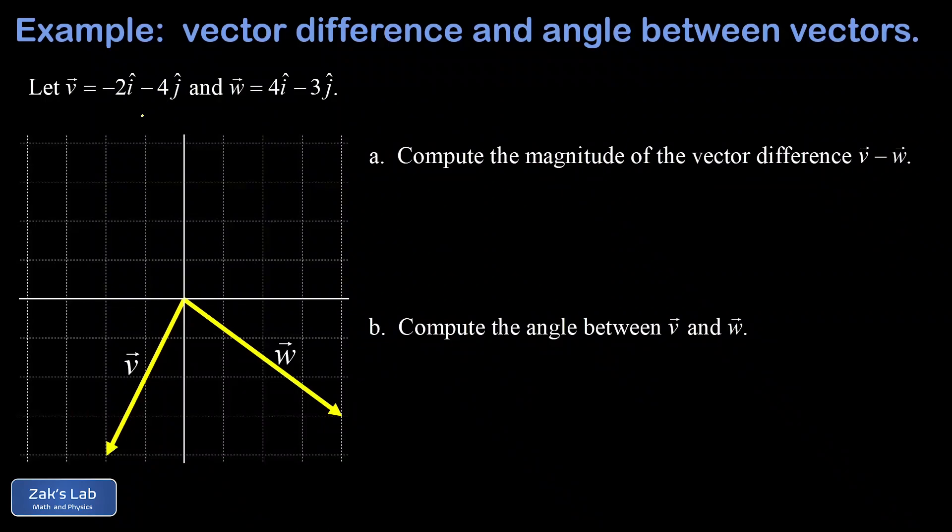In this video we're given two vectors in i-hat j-hat notation. Vector v is -2i-hat - 4j-hat, and we have a picture of that below. It points two units to the left and four down, with its tail attached to the origin.